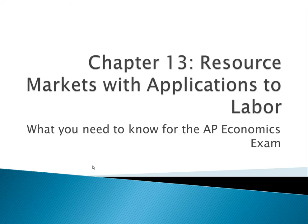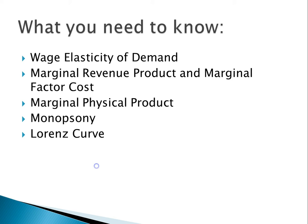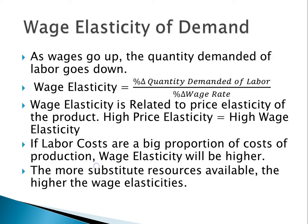Hello, my name is Dylan and welcome to chapter 13 of the Barron's AP Economics book. I will be covering what you need to know for the AP Economics exam in this video. First off, you need to know what the wage elasticity of demand is, what marginal revenue product and marginal factor cost is, what marginal physical product is, what a monopsony is, and what a Lorenz curve looks like.